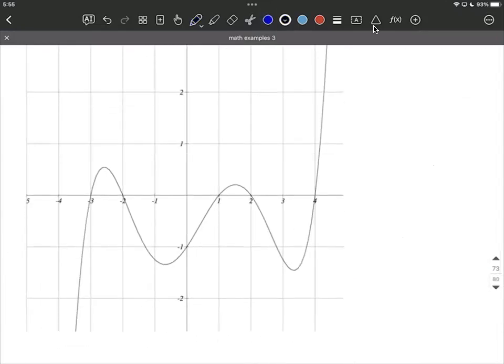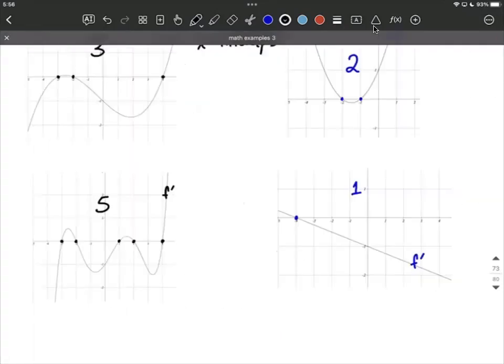One more example here, again, f prime's graph, we get one, two, three, four, five x-intercepts. The derivative is equal to zero five places on this. That means that our original function can have five critical points.